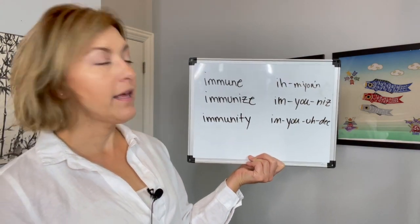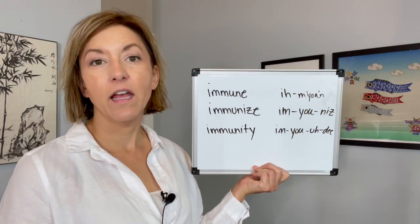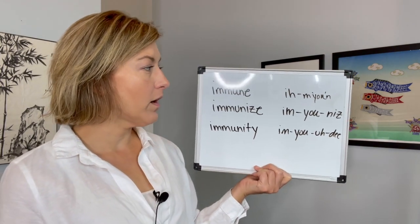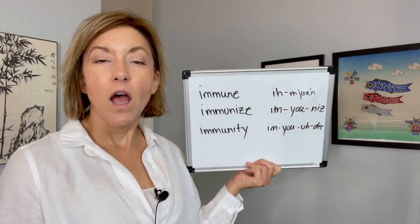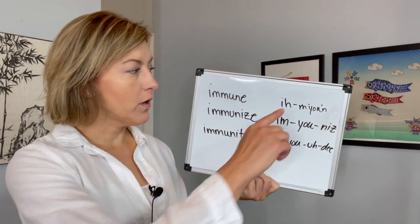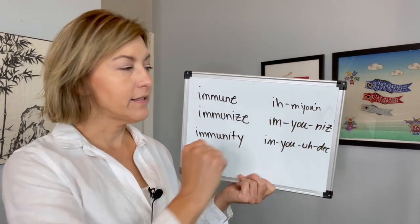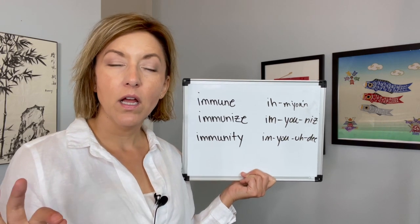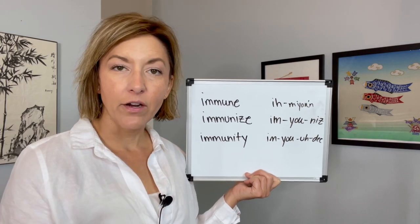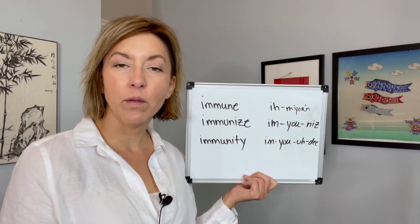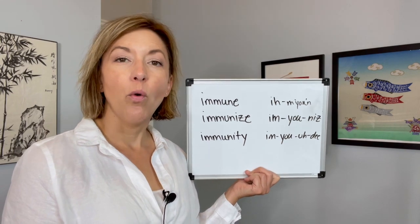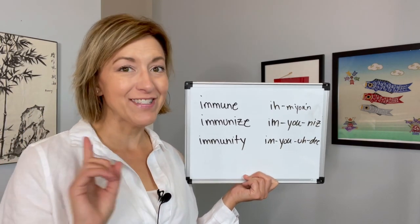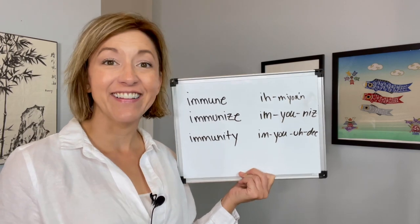We have immune, immunize, and immunity. So let's start with word number one. You are going to pronounce this word by stressing syllable two. So that syllable is going to be louder and higher in pitch, and the vowel is going to be longer. And in this case, we are going to use the vowel 'you,' as in you out there listening.